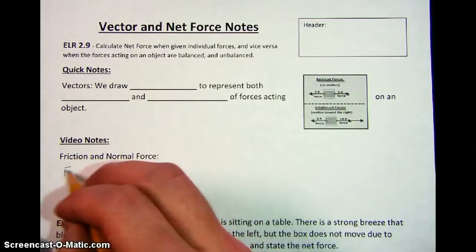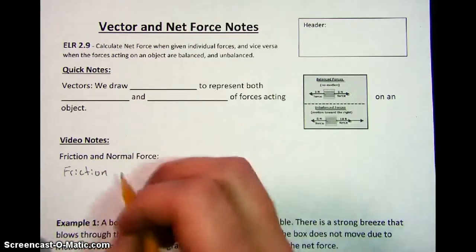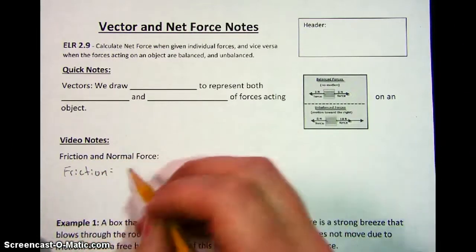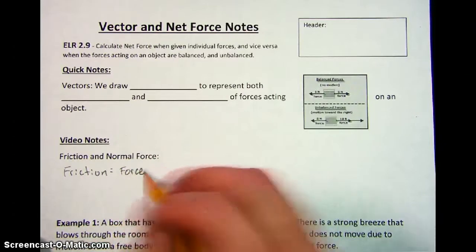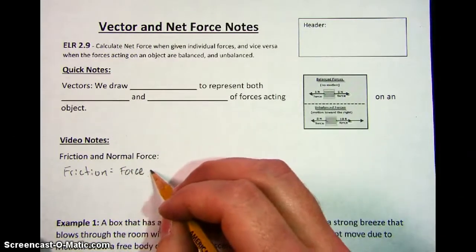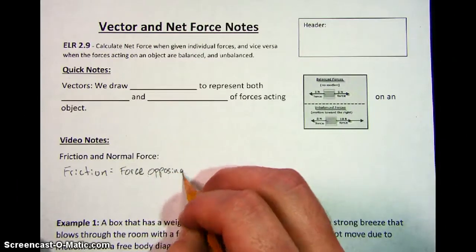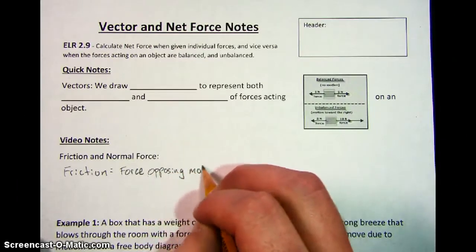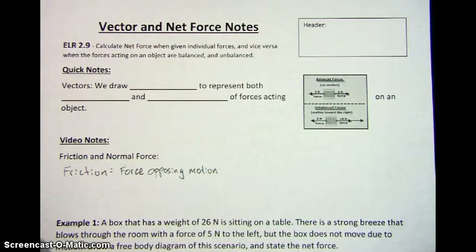For friction, what you need to know is that friction is a force that opposes motion. So friction is a force — it's a push or a pull — and it always goes opposing motion. So if you have something that's going to the left and there's friction involved, friction is a force that points to the right.